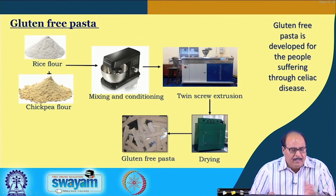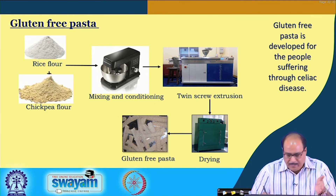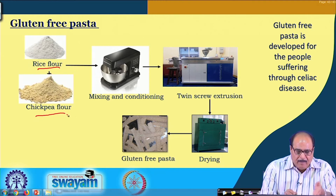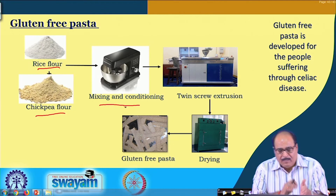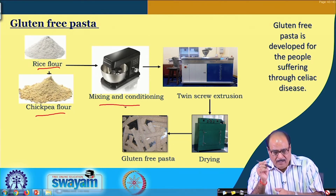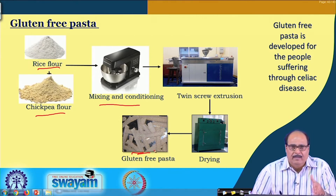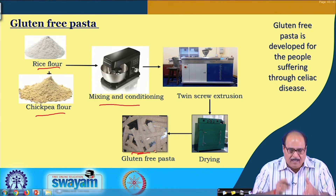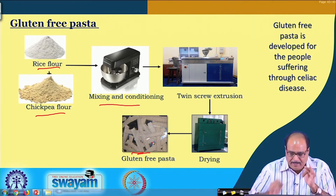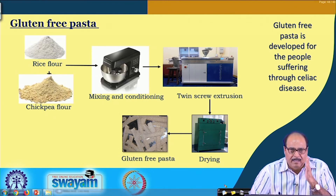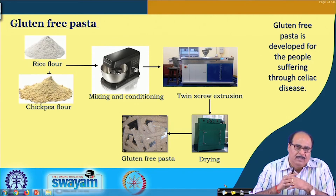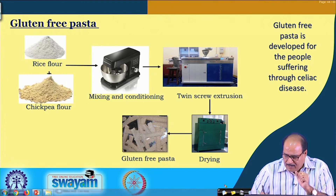Another product is gluten-free pasta. Chickpea flour and rice flour are mixed together, a batter is formed, conditioned and fed to the extruder. Finally it is dried and we get gluten-free pasta. The ingredients are themselves gluten-free, and the extrusion process conditions — particularly mixing and conditioning — are optimized in such a way that we get the desired characteristics of the pasta.